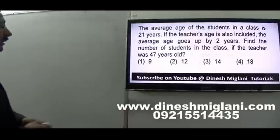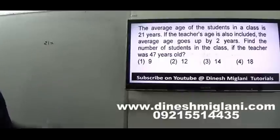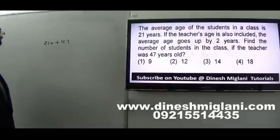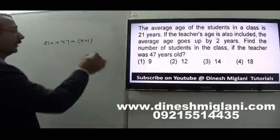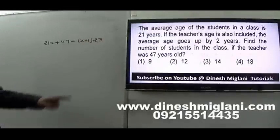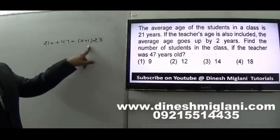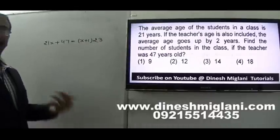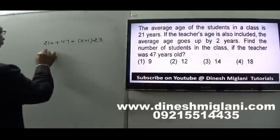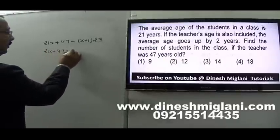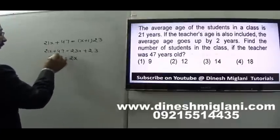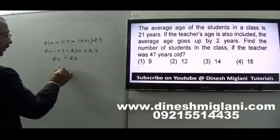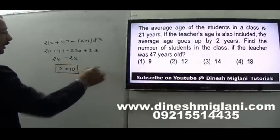Let us say the number of students are X, so total age is 21X. When the teacher is included, total age becomes 21X plus 47, and number of persons becomes X plus 1. Average age increases by 2, meaning new average is 23. So: 21X plus 47 equals 23(X plus 1), giving 21X plus 47 equals 23X plus 23, so 2X equals 24, meaning X equals 12.